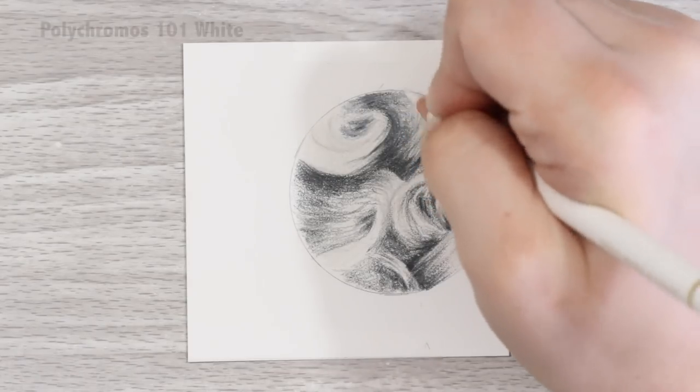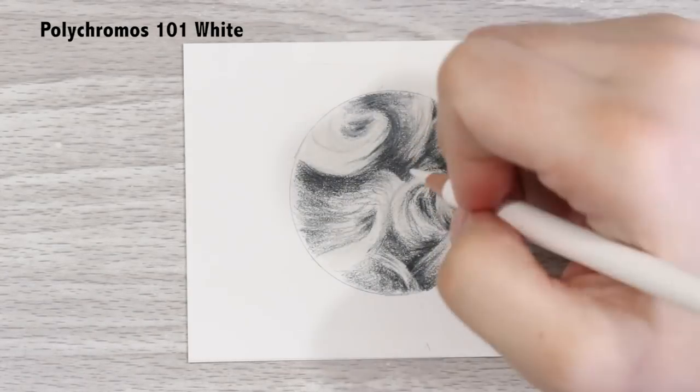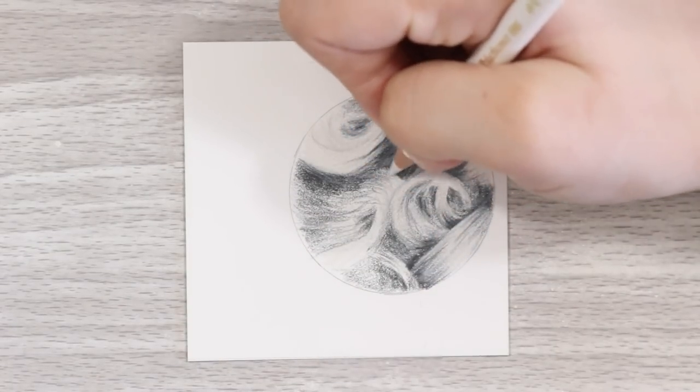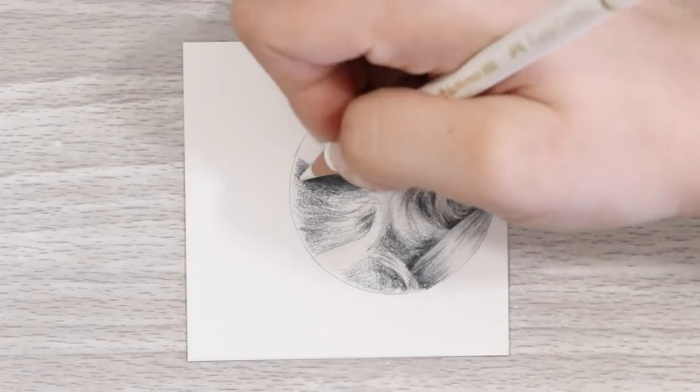I like to go in and blend with a white pencil at this point so that everything looks really nice and smooth and keep the same technique of working section by section and following that direction of the fur.